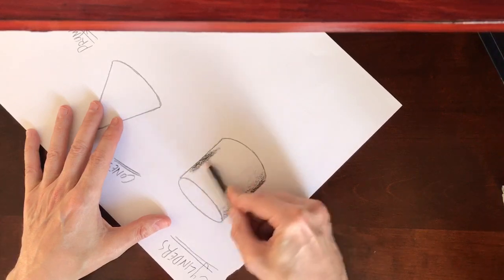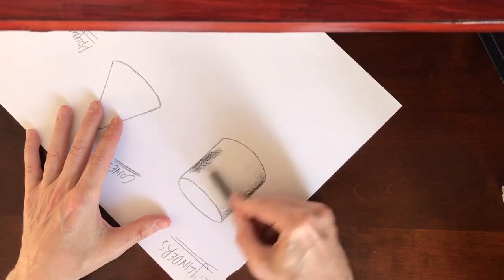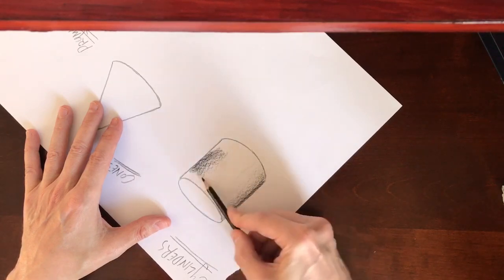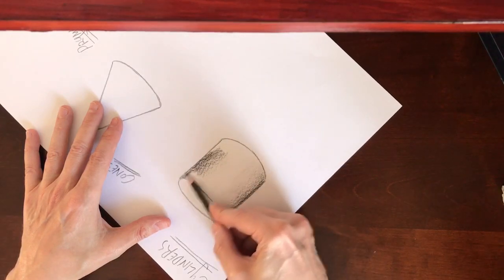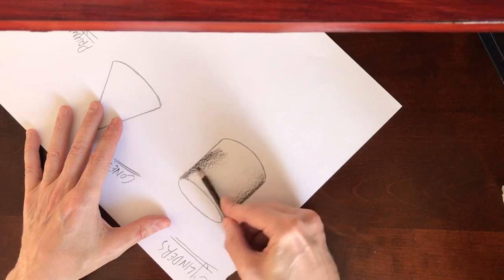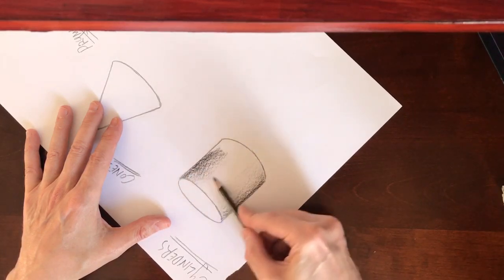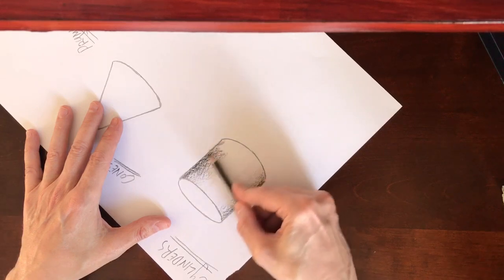On the other side again, we want to have it dark and gradually fading out to nothing. Make sure you don't join the two bands, the left hand side gradient band and the right hand side gradient band. There should be a nice white area roughly in the middle or slightly to the left of the middle of the cylinder.